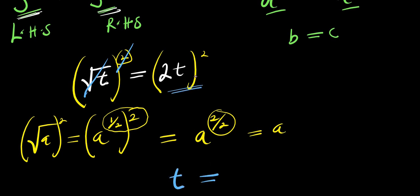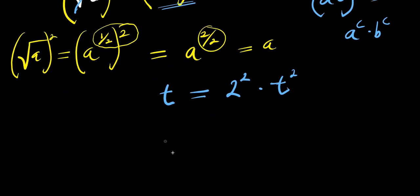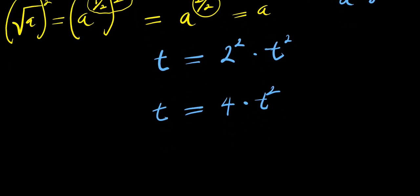On the right hand side, we distribute the square to each term. If you have a times b raised to the power of c, it equals a to the power of c times b to the power of c. So we distribute: 2 to the power of 2 times t to the power of 2. That gives us t equals 4 times t squared, which is 4t squared.